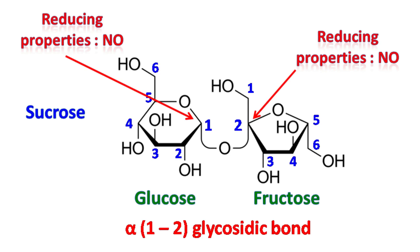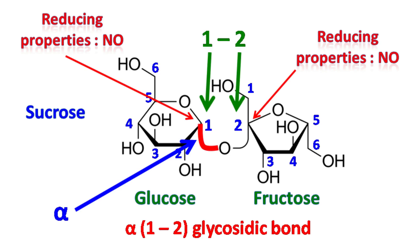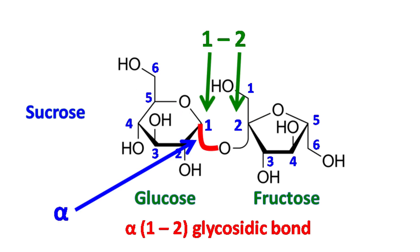Sucrose is commonly known as sugar. It is made up of glucose and fructose joined together by an alpha 1-2 glycosidic bond. It should be noted that in sucrose, the glucose has an alpha structure while the fructose has a beta structure.